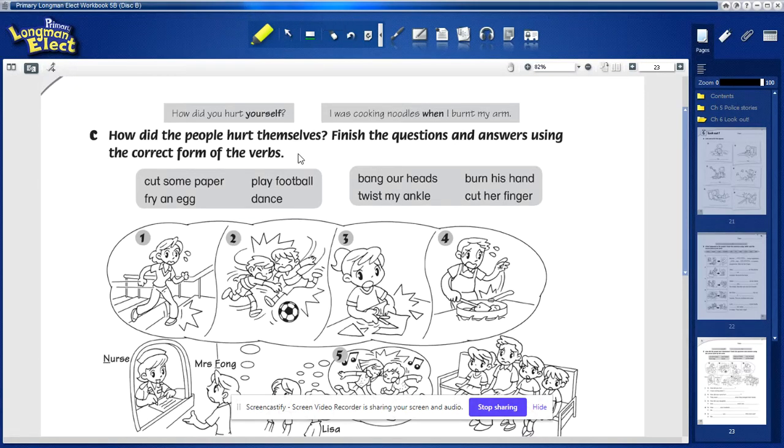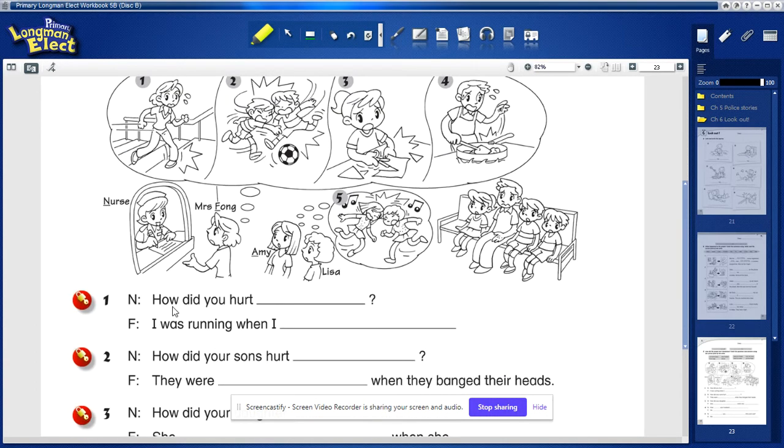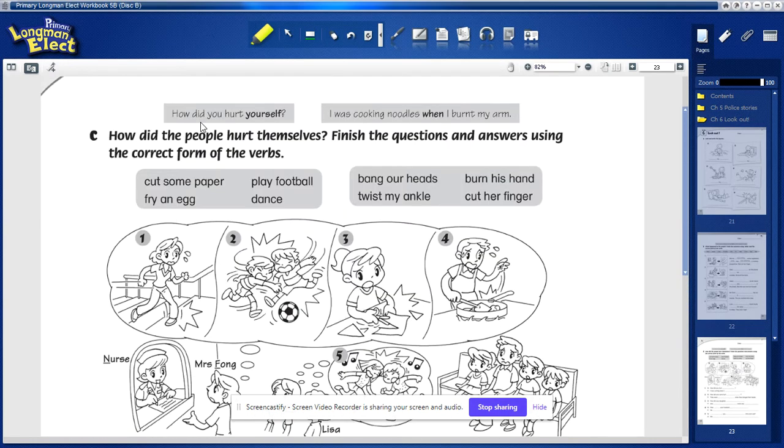All right, we'll continue to talk about page 23 of your workbook. Here you have to write sentences in the format of 'How did you hurt yourself? I was cooking noodles when I burned my arm.'